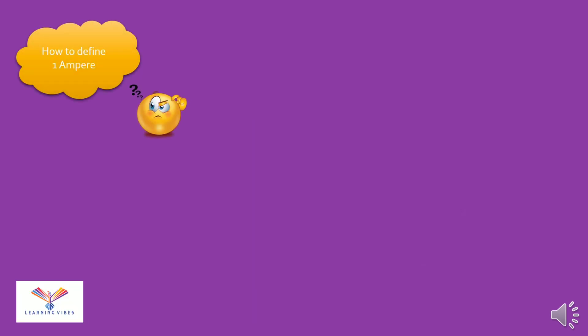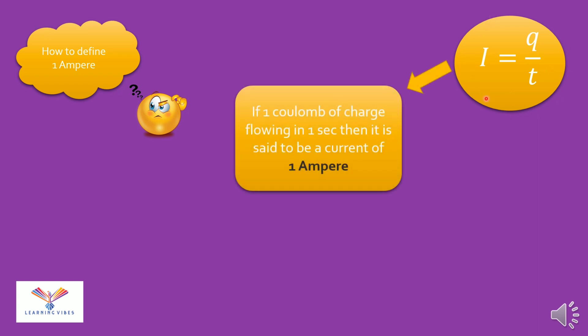Now let's understand how to define 1 ampere. From this equation I is equal to Q by T. If 1 Coulomb of charge flowing in 1 second then it is said to be a current of 1 ampere.